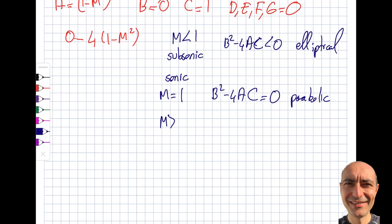What happens if M is larger than one? You see here, if M is larger than one, this number becomes a negative number. Negative times negative becomes positive, so I get myself B² minus 4AC now is greater than zero, and I call this hyperbolic.